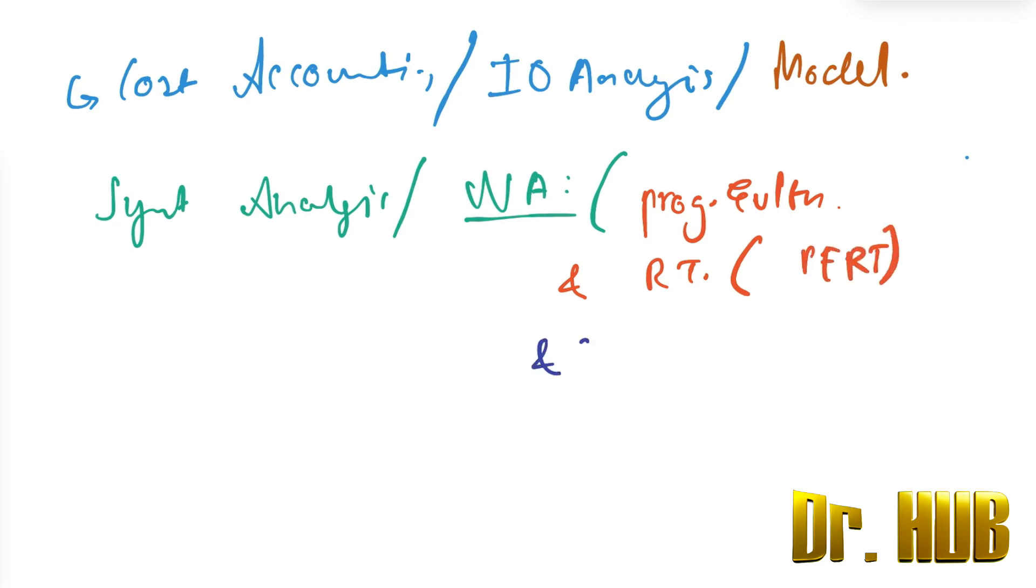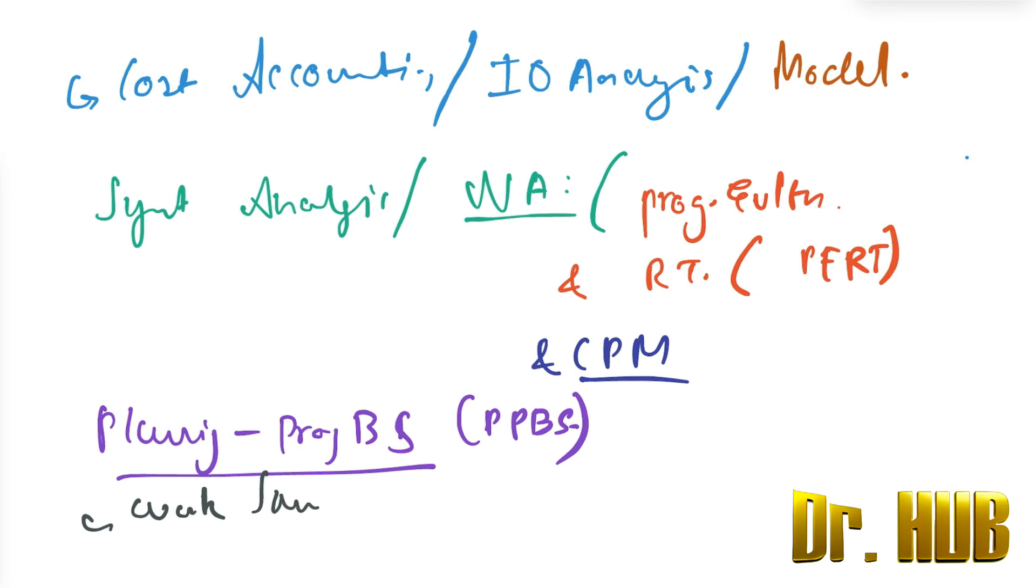And the critical path method. So then comes planning. Planning includes the planning programming budget system, so that is PPBS, planning programming budget system. So then there is also work sampling and the decision menu.